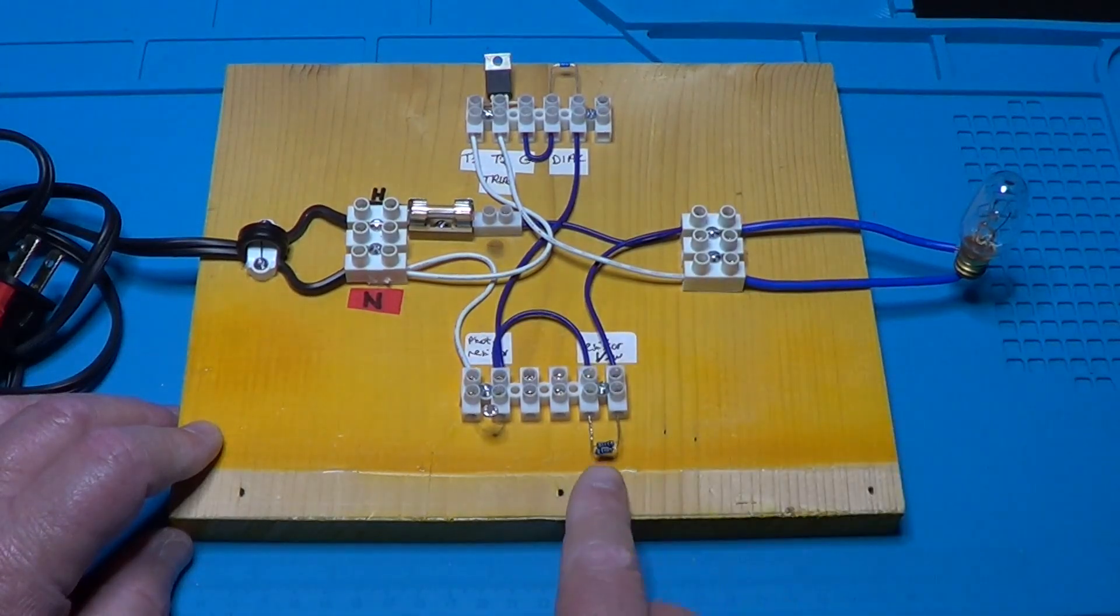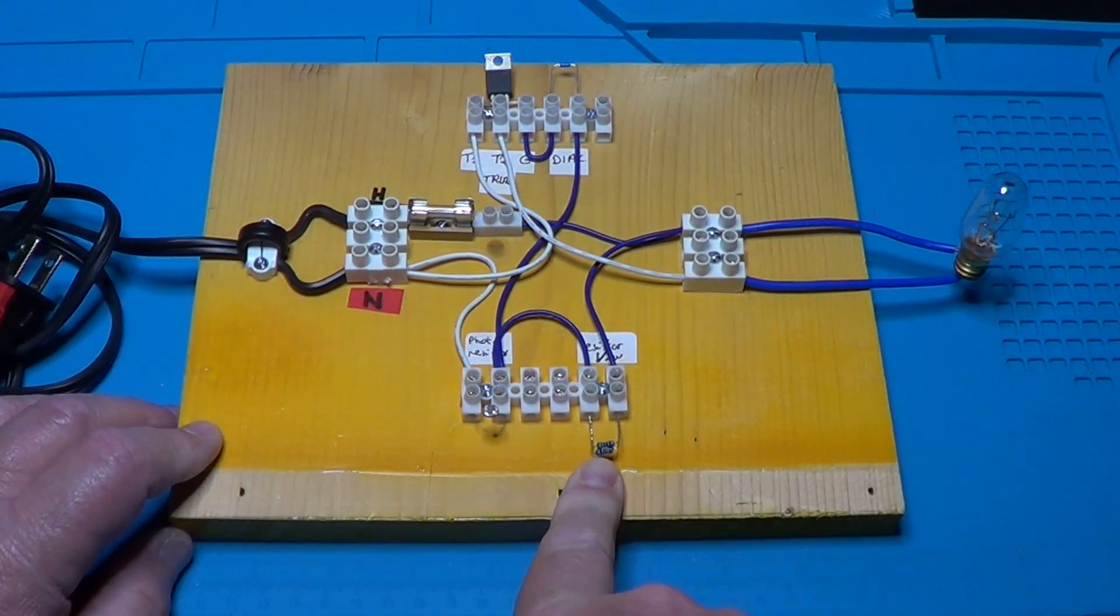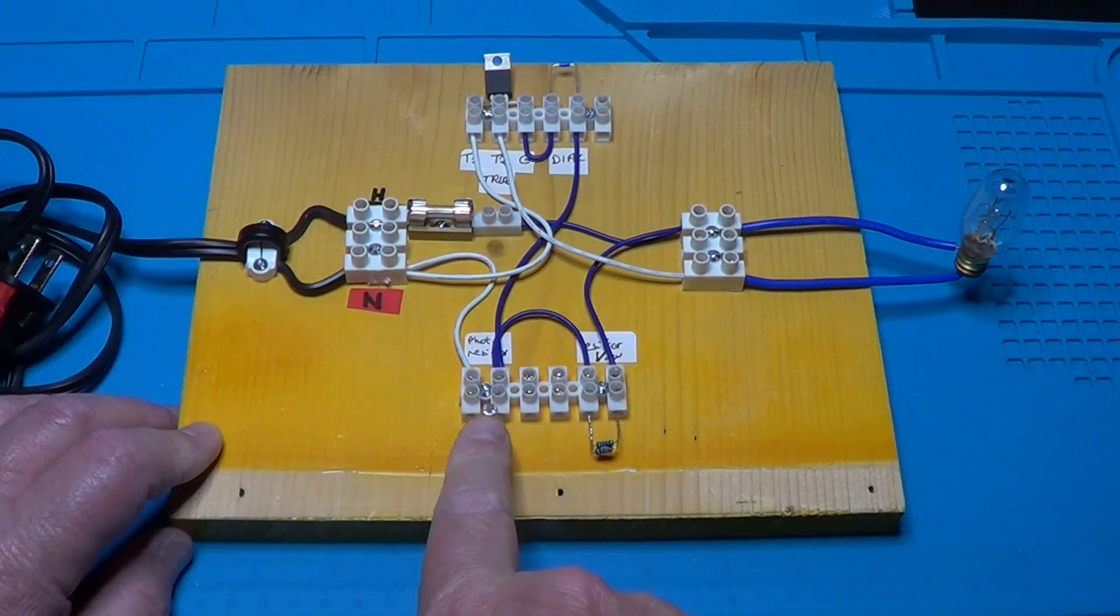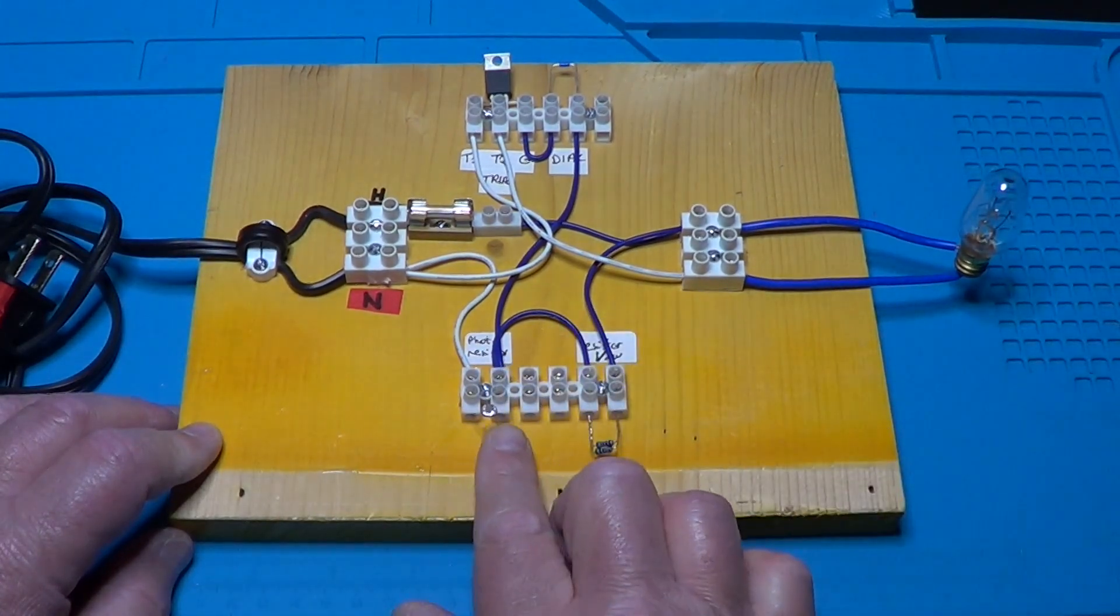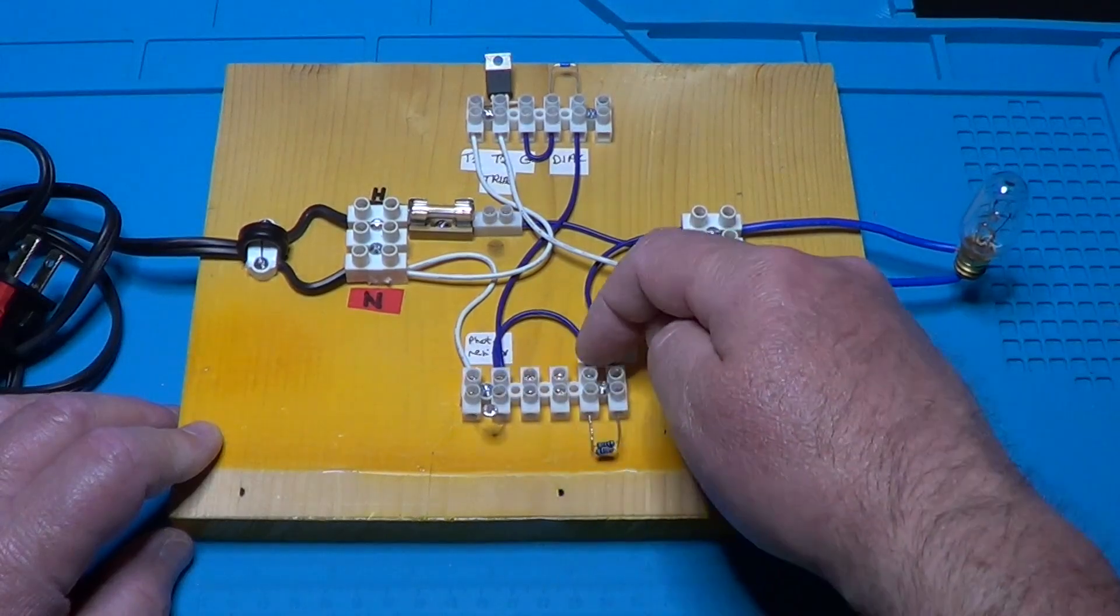For example, here I have the 50K resistor from the schematic and here is the photoresistor, and on the other side of the terminal blocks, here is the wire that connects them in series.